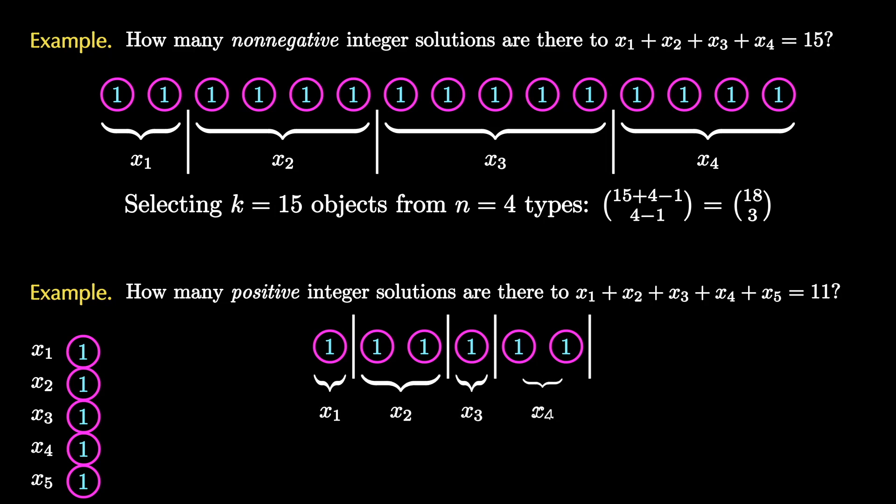Notice in the example that we have here x5 gets no remaining tokens but that's okay because we've already given them one. This problem means we're selecting k equals six objects from n equals five types so we have (10 choose 4) such ways.